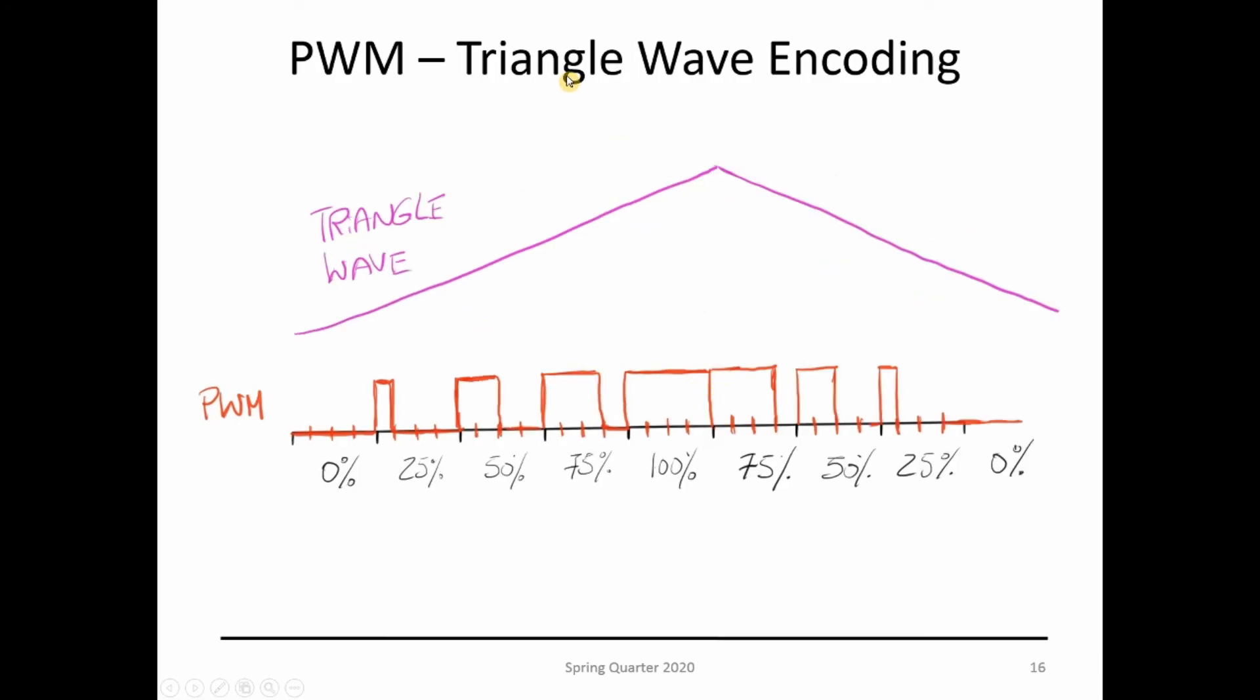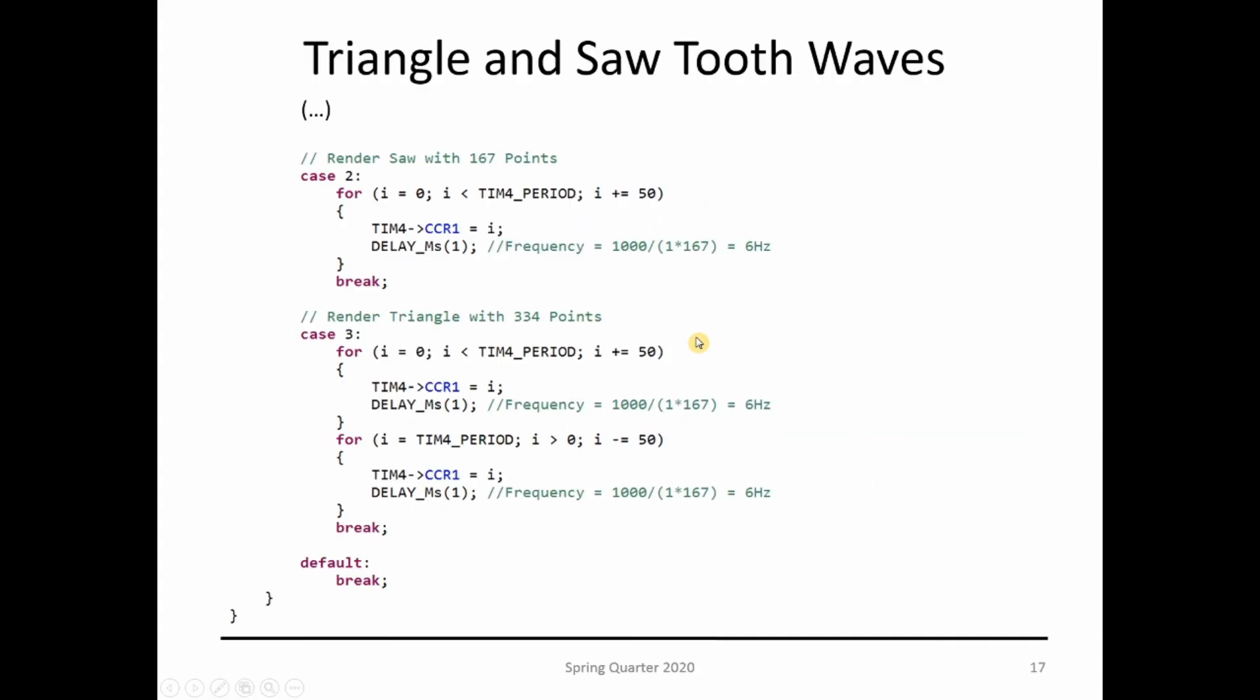The triangle wave is just an extension of the sawtooth. What you do is you go up, and now instead of going to zero on your duty cycle, you just go from the 75 or 100% to zero, whatever you want to do here on a triangle wave.